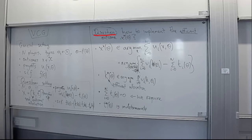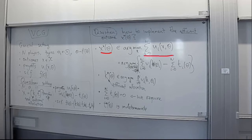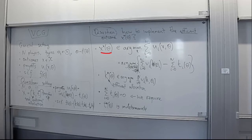First of all, what is the efficient outcome x star of theta? We define x star of theta as the outcome that maximizes the sum of utilities of all players — it is an argmax of the sum of all players' U_i's. Note in particular that we include i equal to zero in this sum, so we include the designer, which can capture the designer's preferences or social preferences not captured by any individual player. The efficient outcome maximizes this sum of utilities, which is the standard measure of welfare in economics.